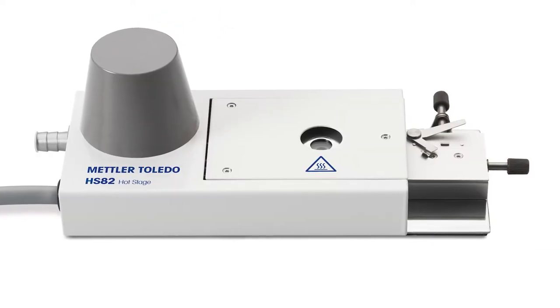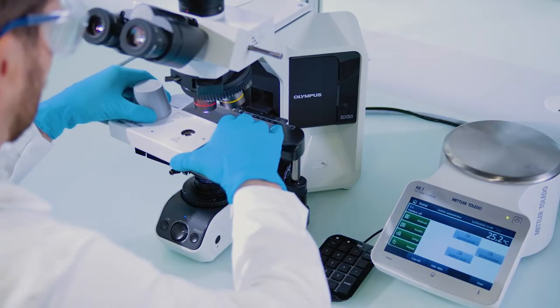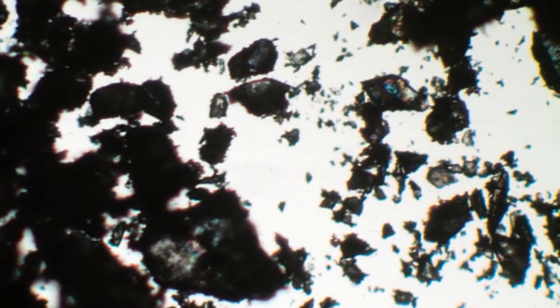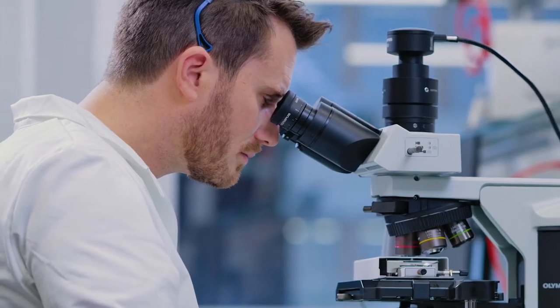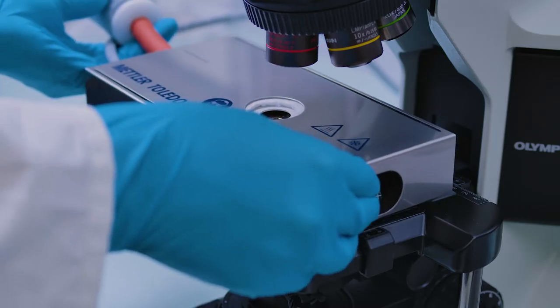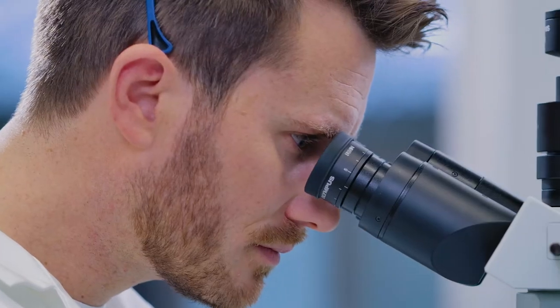With our hot stage system HS82 you can focus on different areas of the sample by moving it using the built-in XY table. Heat or cool the sample while observing it under the microscope. The optional cooling box enables operation at sub-ambient temperatures.